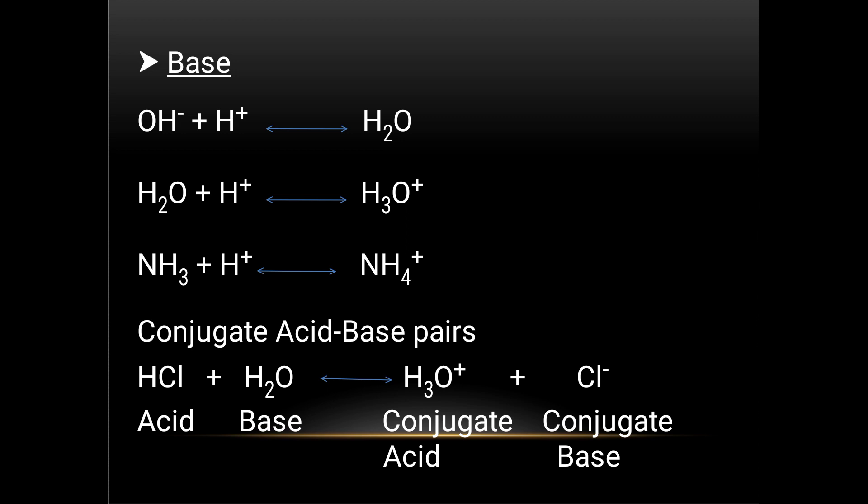In the Bronsted-Lowry concept, conjugate acid-base pairs can be identified. When HCl reacts with H2O, HCl is the acid and H2O is the base, forming H3O+ (hydronium ion) plus Cl-. H3O+ is the conjugate acid and Cl- is the conjugate base.